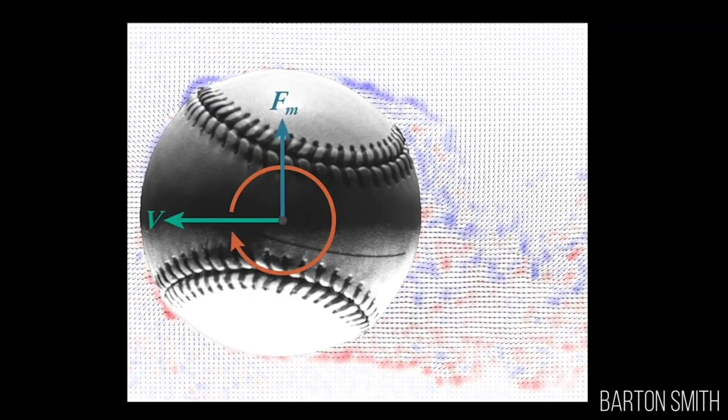One seam on the front will cause the flow to become turbulent, and one on the back will cause the boundary layer to separate. That can be asymmetric, and that causes forces on the ball. If the ball is moving a certain way, the air flows over the top and the bottom and only encounters smooth leather.